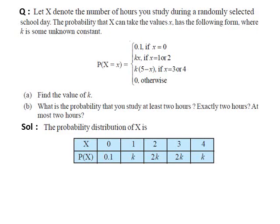Write the probability distribution in tabular form. For x=0, P(x)=0.1. For x=1, P(x)=k×1=k. For x=2, P(x)=k×2=2k. For x=3, P(x)=k×(5−3)=2k. For x=4, P(x)=k×(5−4)=k. For x=5 onwards, P(x)=0, so no need to write.